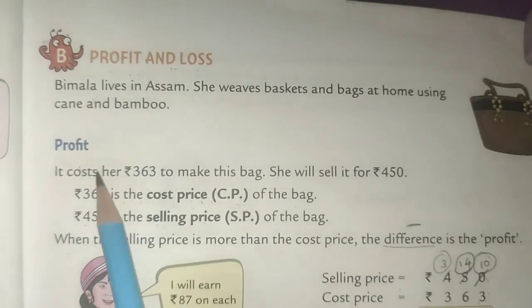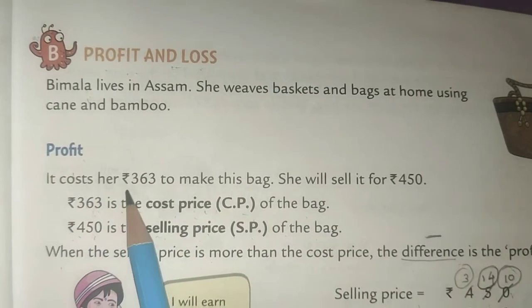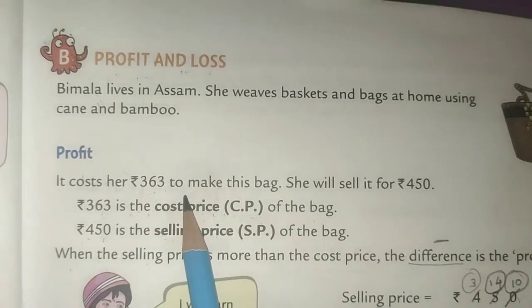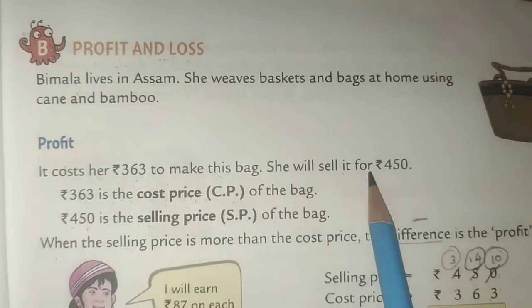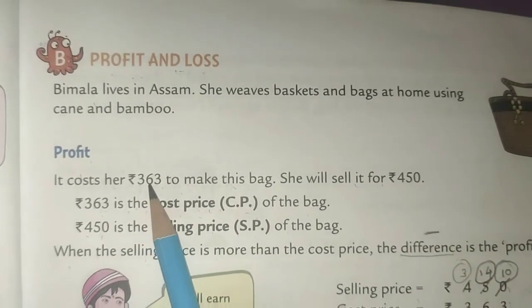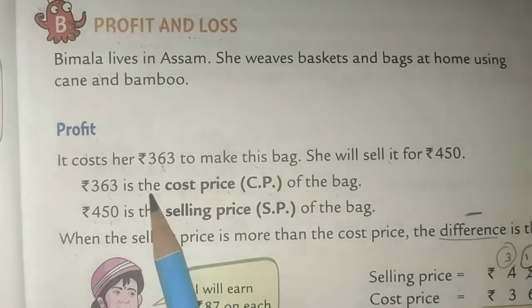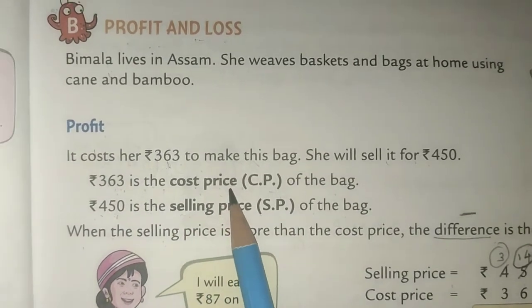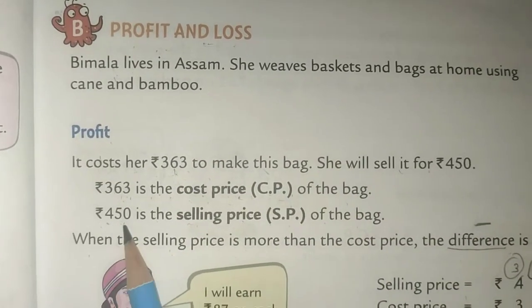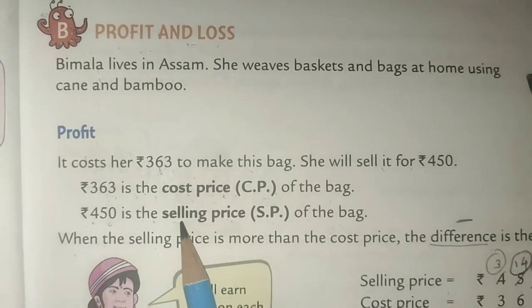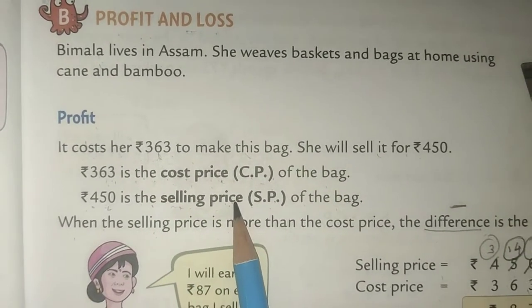Bimla makes a bag, and it costs her 363 rupees to make it. After making the bag, she will sell it for Rs. 450. So the cost price (CP) of the bag is 363, and the selling price (SP) is 450.